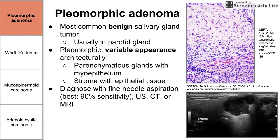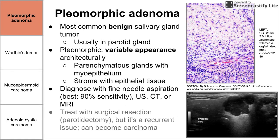You diagnose pleomorphic adenoma with fine needle aspiration, which has a pretty good sensitivity. You could also use ultrasound, CT, or MRI — that's actually an ultrasound shown on the bottom right — but fine needle aspiration has the best sensitivity.